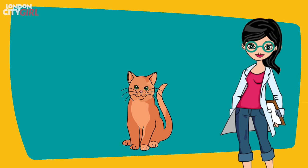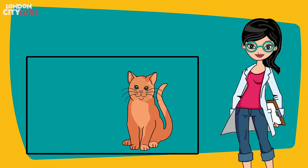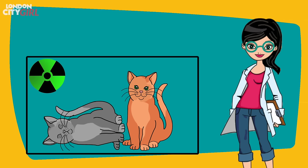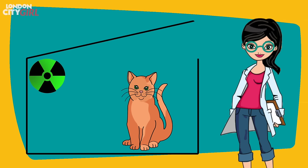In this experiment, a cat is placed in a covered box with a radioactive sample that has a 50% chance of decaying and killing the cat. While the box is covered we have no idea if the cat is dead or alive, and only once we open the box will we know if the cat made it or not.